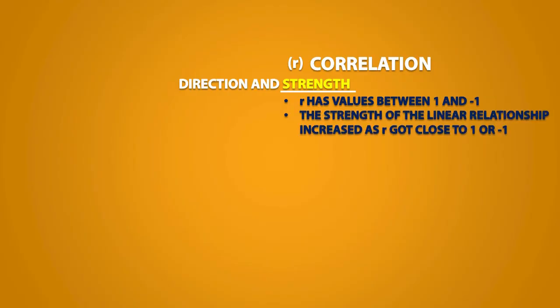We saw that r has values between positive 1 and negative 1, and we saw that the strength of the linear relationship increased as r got close to positive 1 or negative 1. So when r is equal to 0, this means that there is no correlation. In other words, there is no linear relationship whatsoever.